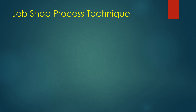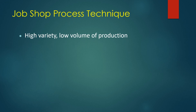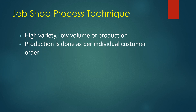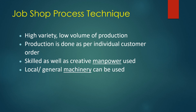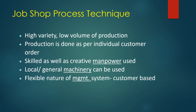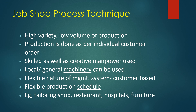Under the job shop process technique, there is high variety and low volume of production. Production is done as per individual customer orders. Skilled as well as creative manpower are used. Local and general machinery can be used, as manpower is given more emphasis. It has a flexible nature of management system with a flexible production schedule according to customer time and requirements. Examples include tailoring shops, restaurants, hospitals, and furniture shops.